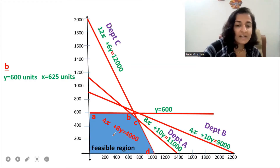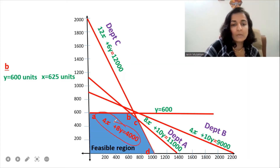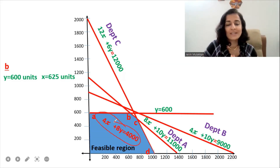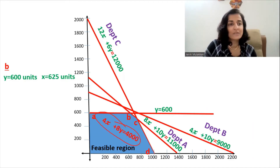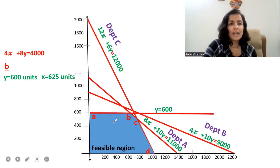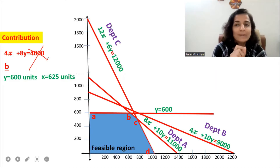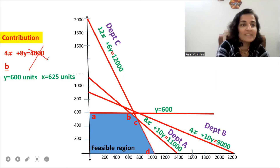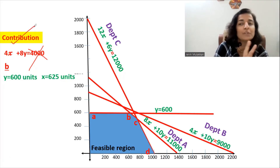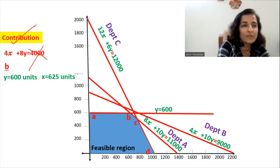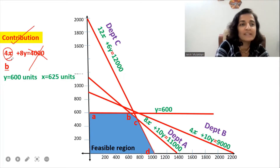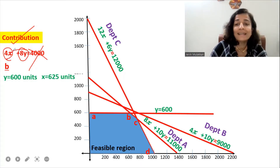We will get rid of the ISO contribution line — that's the yellow line. The ISO contribution line equation, 4X plus 8Y equals 4000, and the assumed contribution of $4,000 — we don't need those in the simultaneous equation method. The only detail we need from the question is the contribution of the two products: the contribution per unit of X is $4, and the contribution per unit of Y is $8.